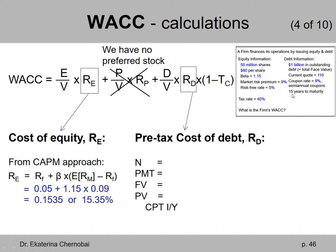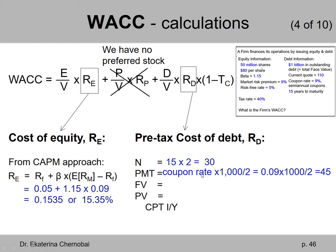N: 15 years to maturity with semi-annual coupons means two per year, so N = 15 × 2 = 30. PMT: the coupon rate is 9%, so annually it's 9% × $1,000 = $90, and semi-annually that's $90 ÷ 2 = $45 per half year. FV: the face value is always $1,000.